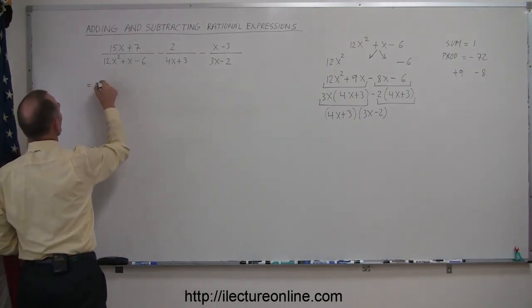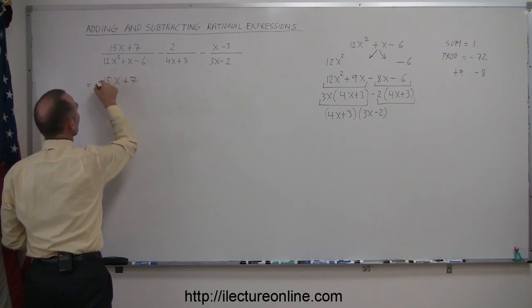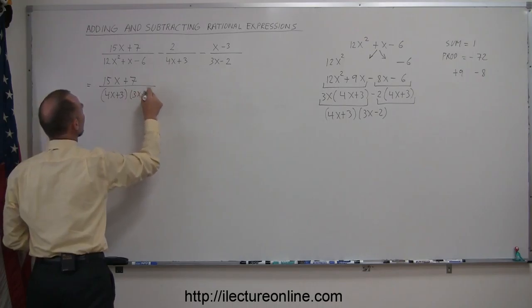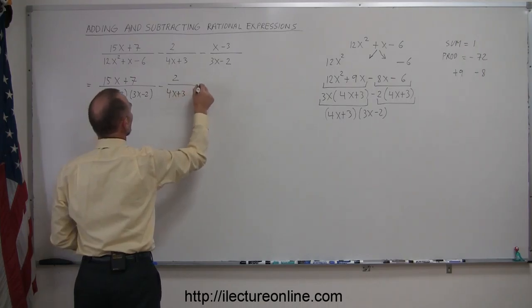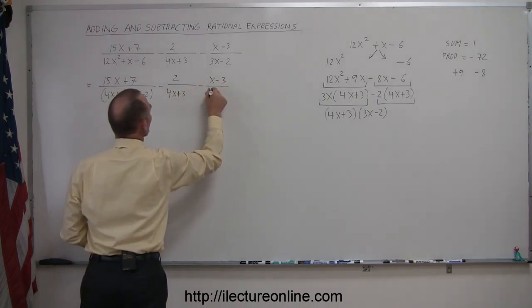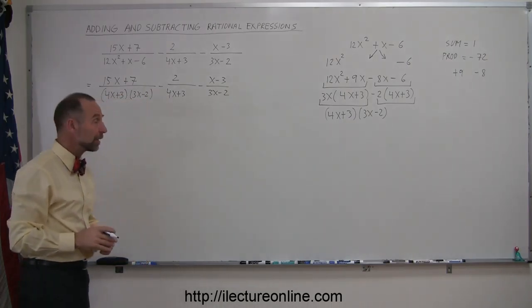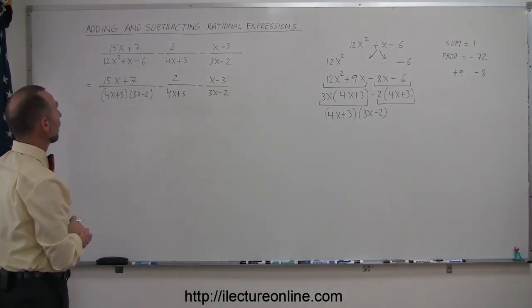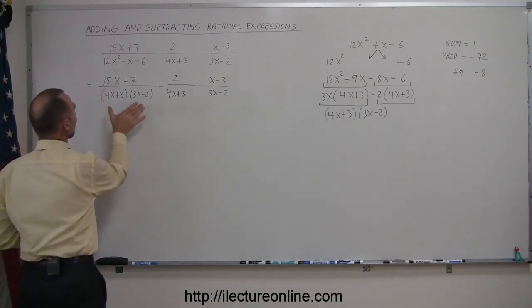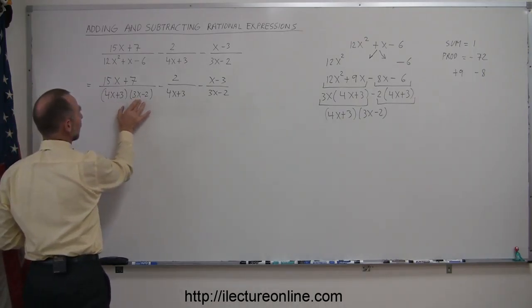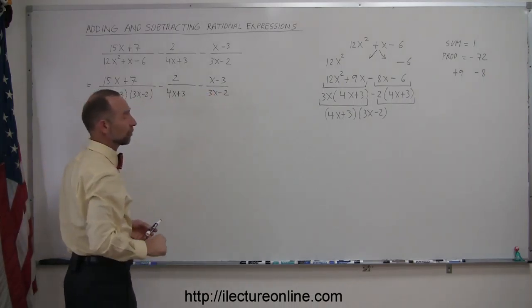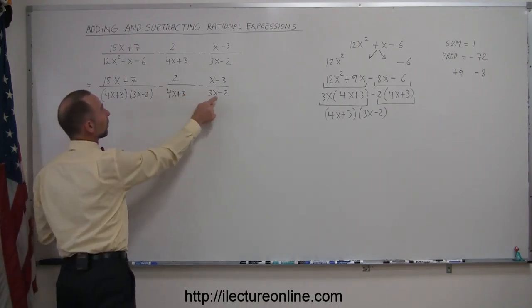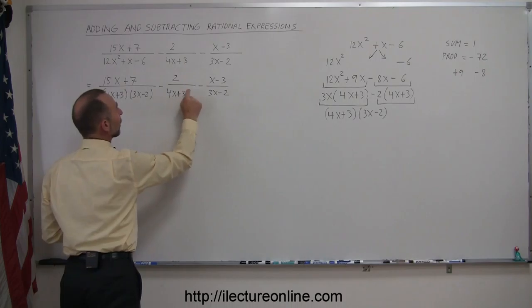This is equal to (15x + 7) / [(4x + 3)(3x - 2)]. I still have the minus 2 times (4x + 3). And I still have the minus (x + 3) over (3x - 2). So now we can in order to begin to solve this, we need the common denominators. We can see that this has both denominators, 4x + 3 and 3x - 2. This one is missing the 3x - 2, and that one is missing the 4x + 3. So we're going to multiply this denominator by 3x - 2. We're going to multiply this denominator by 4x + 3.